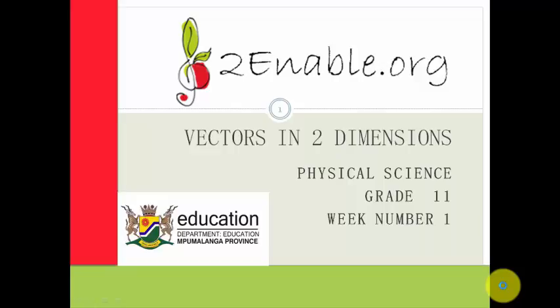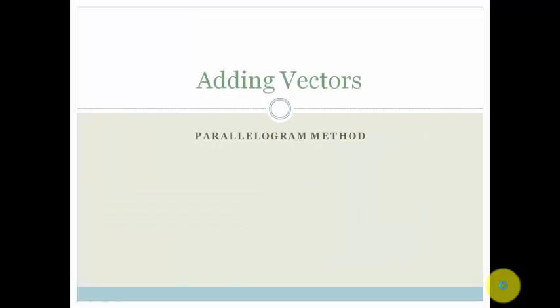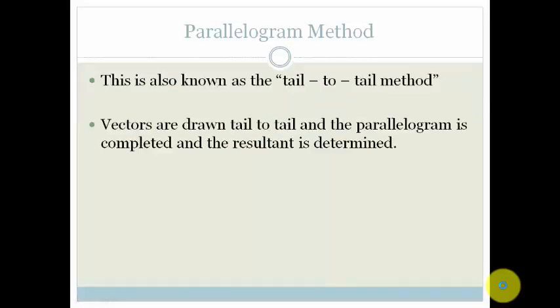Good day, grade 11s. Welcome to this next lesson in Vectors in Two Dimensions. In this lesson, we're going to be looking at another way that we can find the direction of a vector and the resultant of a vector in two dimensions, and that is the parallelogram method. But what is the parallelogram method? This is also known as the tail-to-tail method. Vectors are drawn tail-to-tail, and the parallelogram is then completed and the resultant determined.